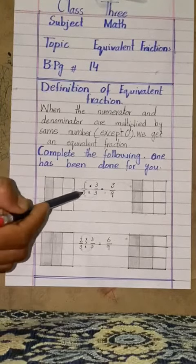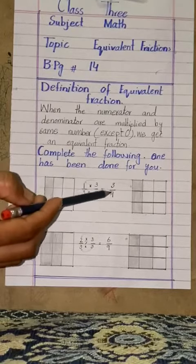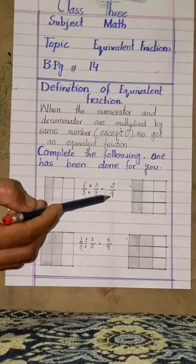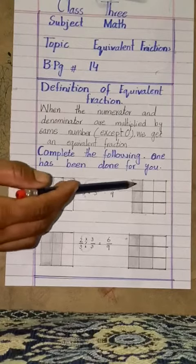See here, 3 times 1 is 3, 3 times 3 is 9. It means total boxes should be 9 and 3 should be colored. See here.